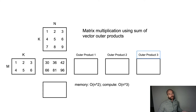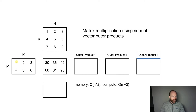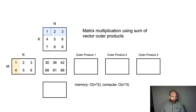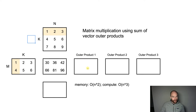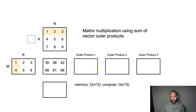There are three outer products because the inner dimension K is size three. The way we do an outer product: first we take one column of this matrix and one row of the other matrix. These two rows will generate two rows, and these three columns will generate three columns. The outer product matrix is placed where the output belongs. We do a vector outer product between these two vectors and it produces an output of size M by N.